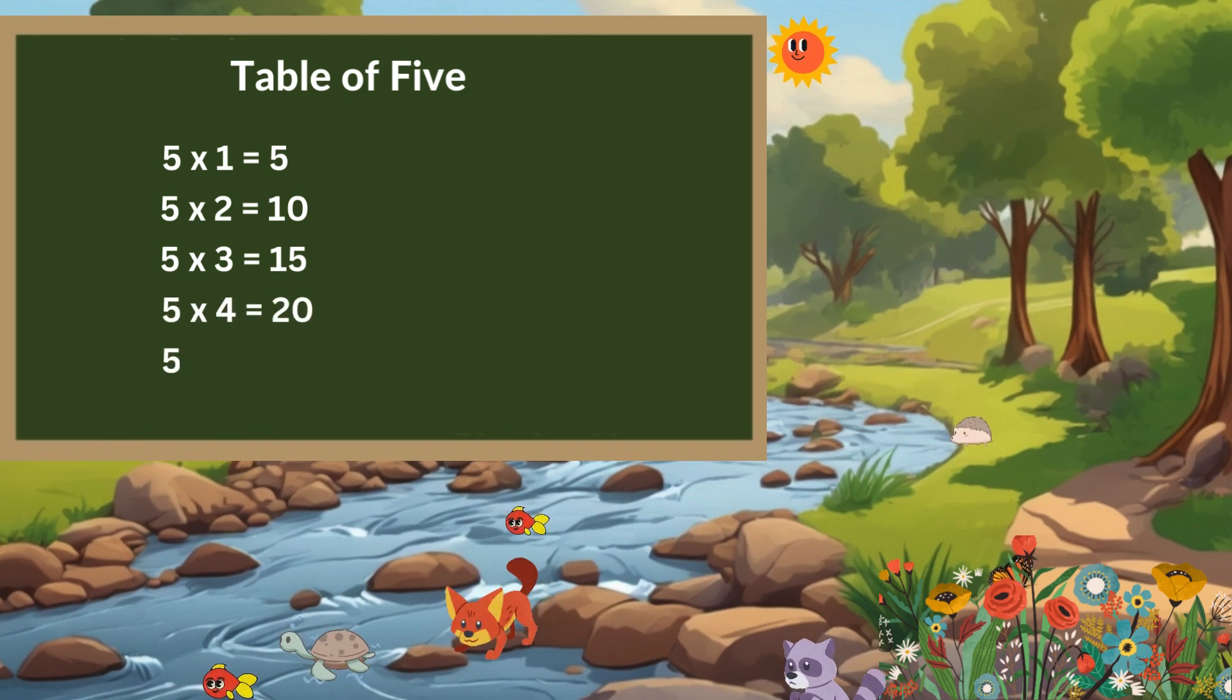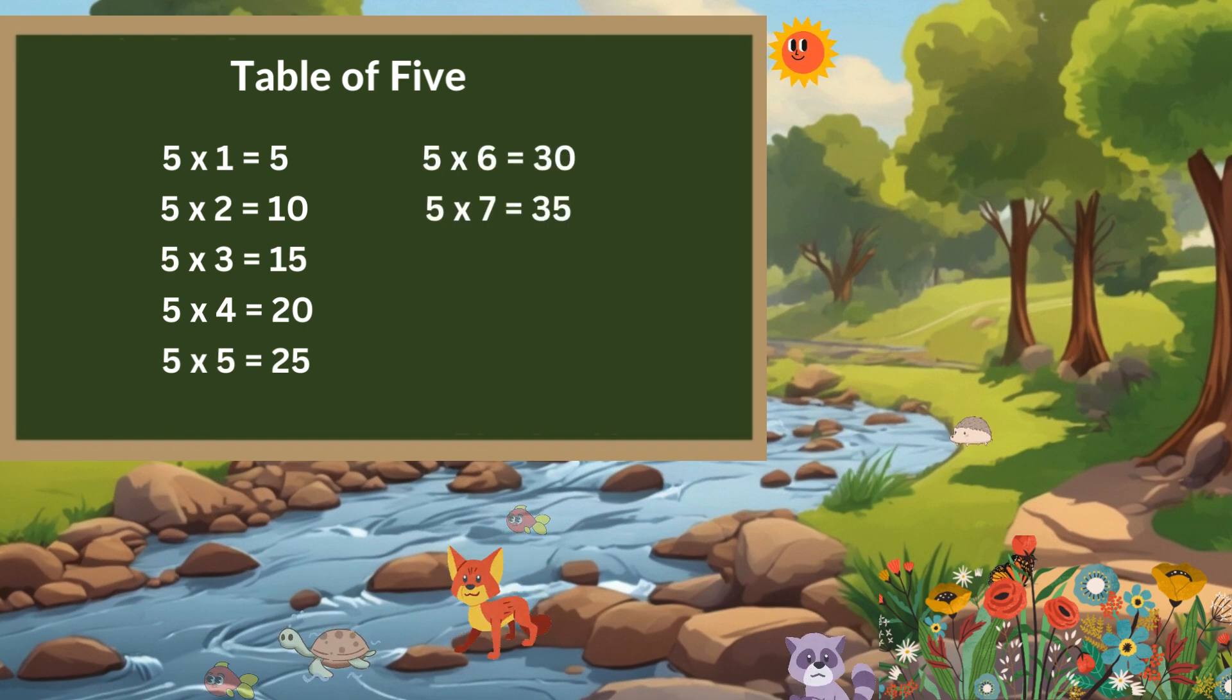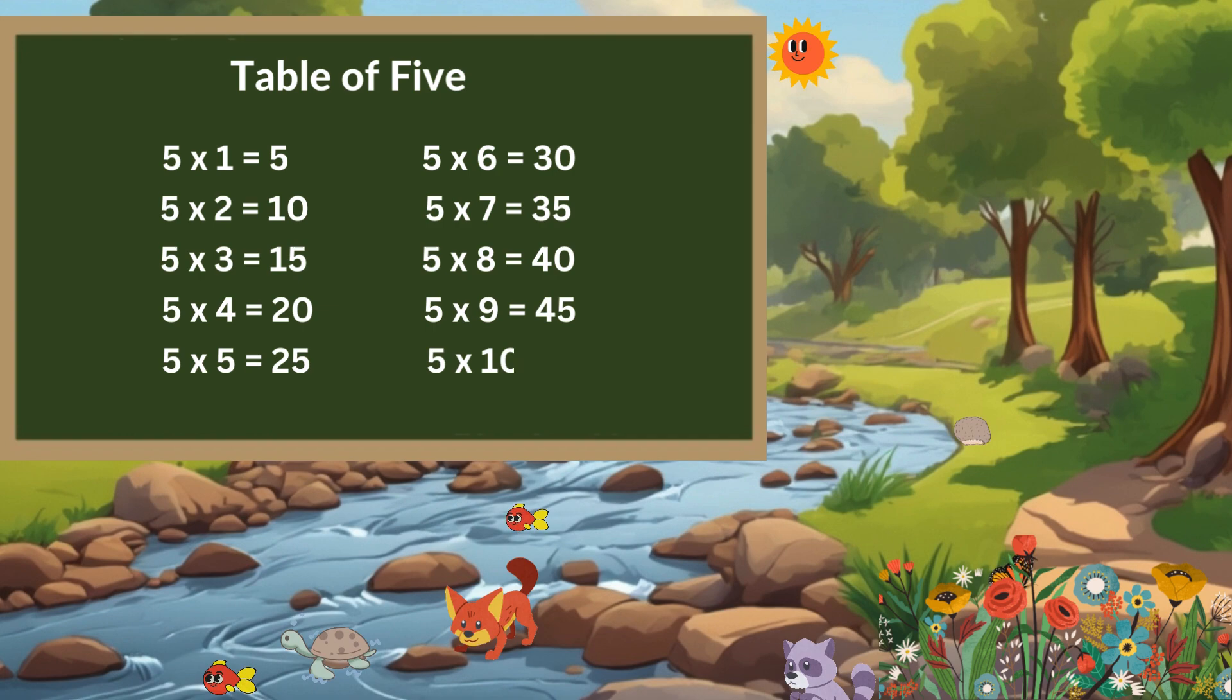5 times 5 is 25, 5 times 6 is 30, 5 times 7 is 35, 5 times 8 is 40, 5 times 9 is 45, 5 times 10 is 50.